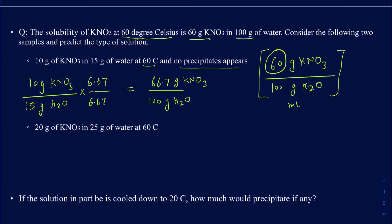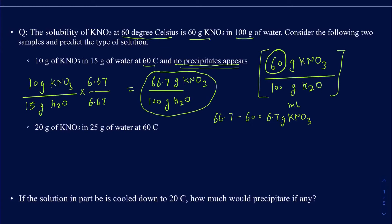Since 66.7 grams exceeds the saturation limit of 60 grams, some solid should appear. However, the question specifies no precipitate is forming, meaning the excess — about 6.7 grams of KNO₃ that should have precipitated — is still staying in dissolved form. That makes this a supersaturated solution.